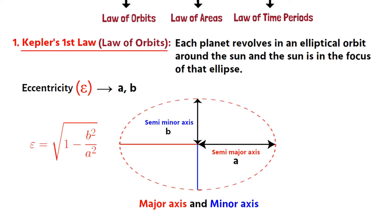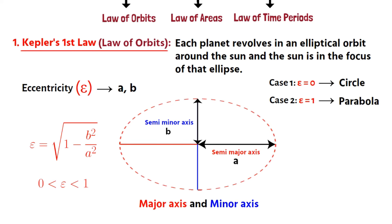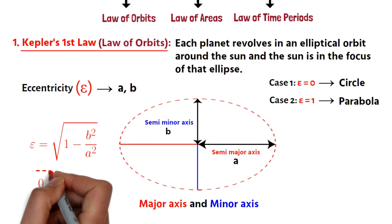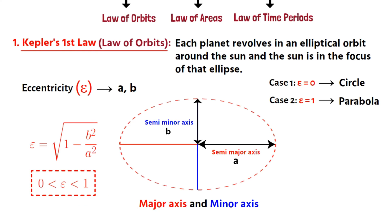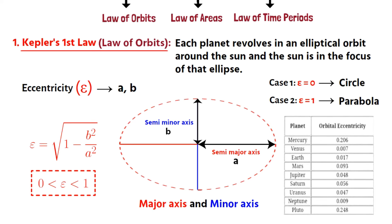The eccentricity of an ellipse varies from 0 to 1. If it is 0, the ellipse becomes a circle, and if it is 1, the ellipse becomes a parabola, or essentially a flat line. So for an ellipse, eccentricity ranges from 0 to 1. Among the planetary orbits, only Pluto has a large eccentricity. Here is a table showing the eccentricity of the orbits of the planets in our solar system.